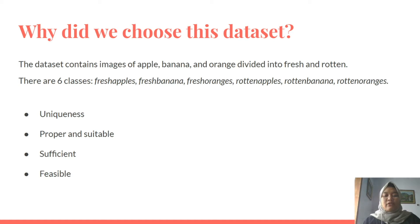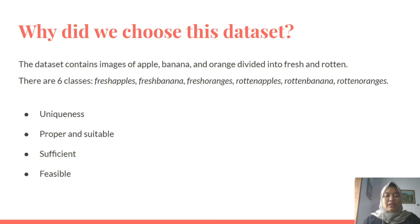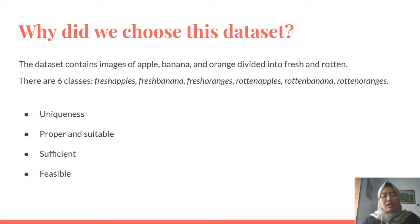The six classes are: fresh apples, fresh bananas, fresh oranges, rotten apples, rotten bananas, and rotten oranges. Why did we choose this dataset? First, for its uniqueness — we consider this dataset unique because it is in line with our needs in detecting fruit and also consists of rotten fruit that will enrich our data. It is also suitable — it fits our idea. It is sufficient — the amount of data is enough to get optimal results. And it is feasible in quality — good enough to process further and opens chances for improvement.